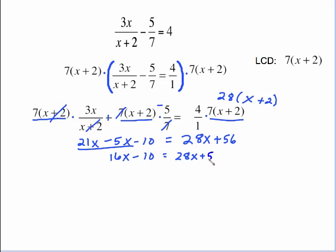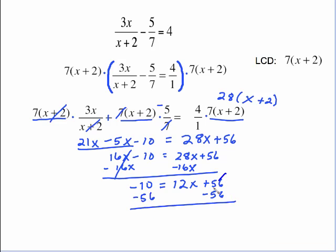We want to get our x's to one side and our numbers to the other so subtract 16x from both sides which gives us negative 10 because those cancel out equals 12x plus 56. Let's get the x alone. Let's subtract 56 from both sides. Cancels out. We have 12x. Negative 10 and negative 56. Those are both negatives. Keep the negative sign and add. Undo this multiplying step by dividing both sides by 12. And last reduce your fraction by 6 and get negative 11 halves.